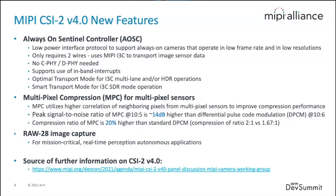VPCSI2 provides new features. The Always-on Sentinel controller is a low-powered interface protocol to support always-on cameras operating at low frame rates and low resolutions. Using only the sideband channel, there is no need for CPHY and DPHY, reducing the number of wires and power consumption. Multi-pixel compression is the evolution of the previous compression protocol, with gains up to 20% higher. RAW28 image capture supports mission control, real-time perception, and autonomous applications — ideal for machine learning.